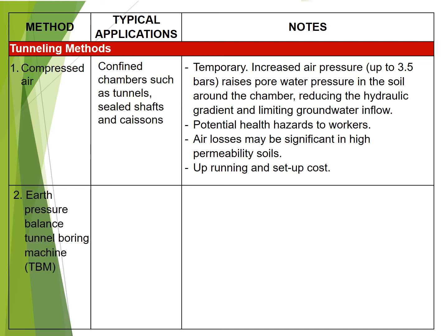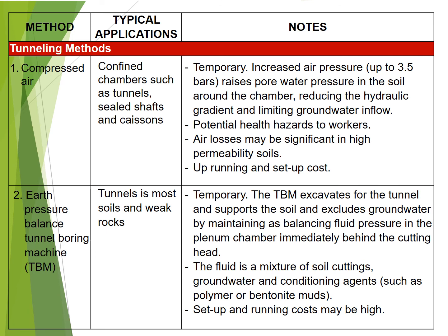2. Earth pressure balance tunnel boring machine (TBM): used in tunnels in most soils and weak rocks. Temporary. The TBM excavates the tunnel and supports the soil and excludes groundwater by maintaining a balancing fluid pressure in the plenum chamber immediately behind the cutting head. The fluid is a mixture of soil cuttings, groundwater and conditioning agents such as polymer or bentonite muds. Setup and running costs may be high.